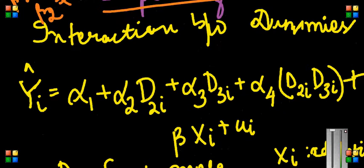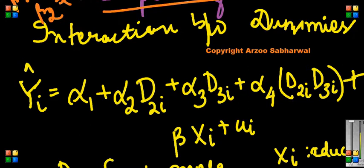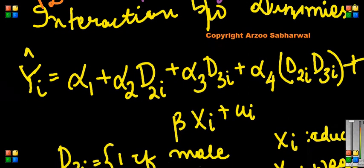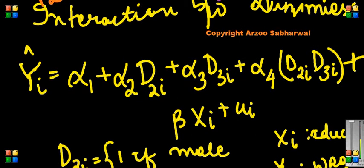Coming forward, I now want to talk about the interaction between the dummies. So Y_hat is equal to α_1 + α_2 D_2i + α_3 D_3i, everything is the same. Look here, here I am introducing interactions between the dummies. Now where will this be useful?